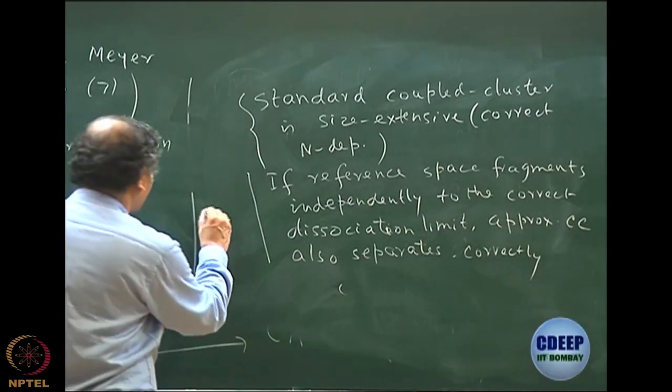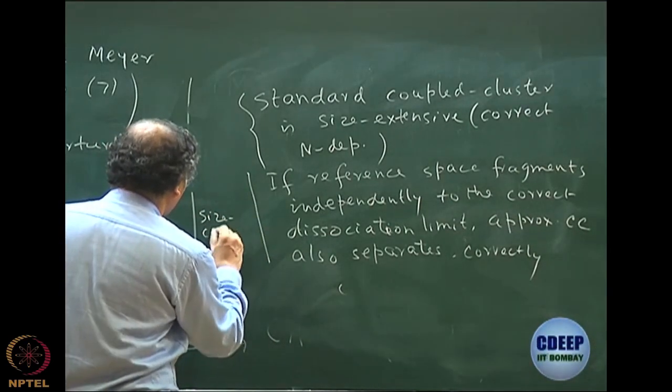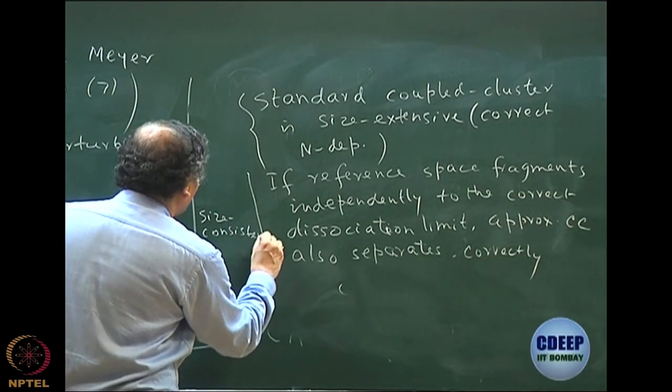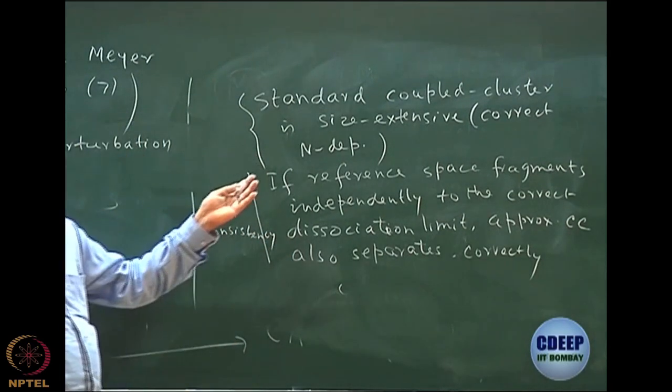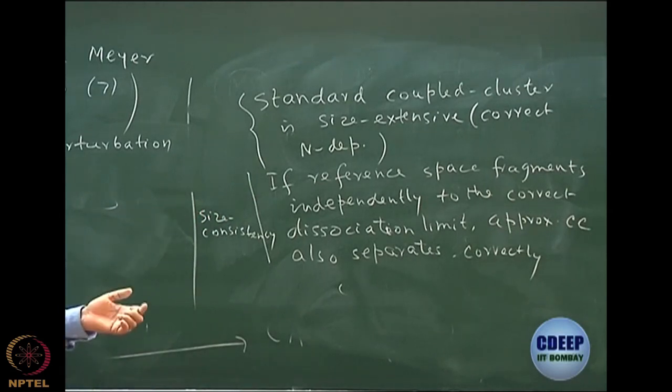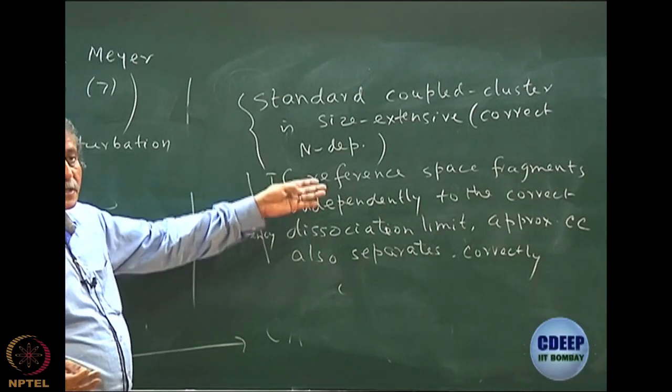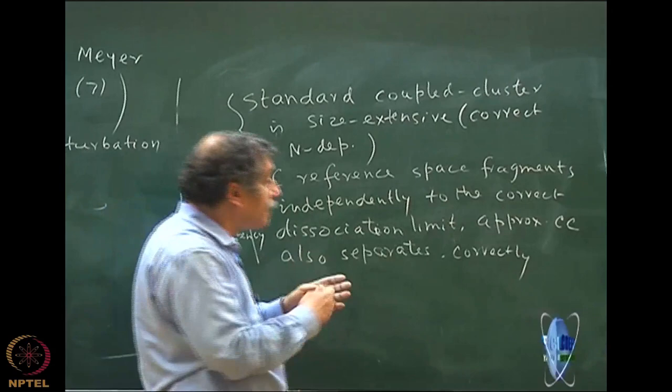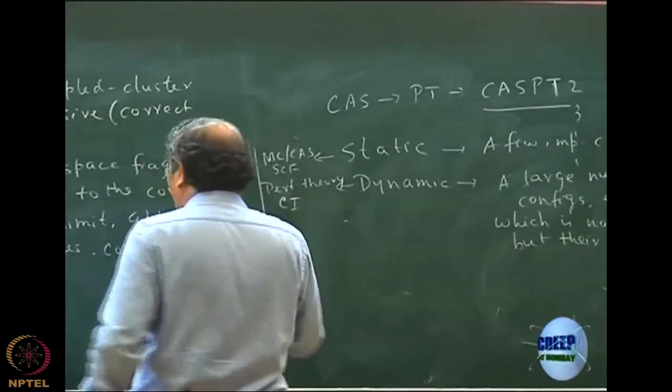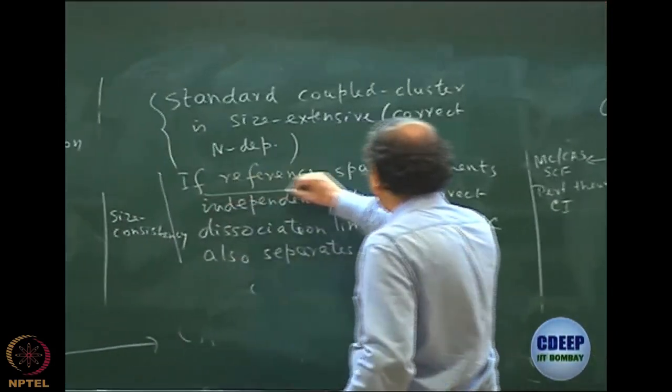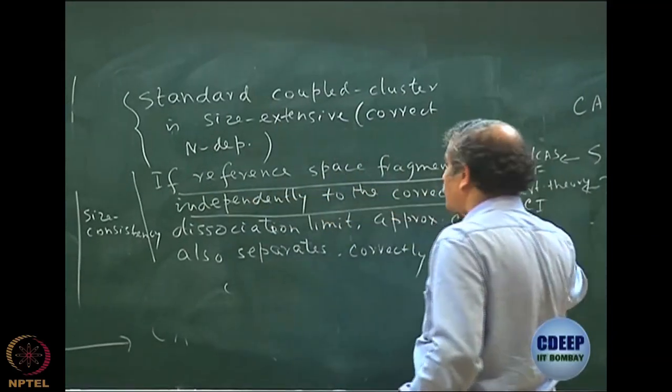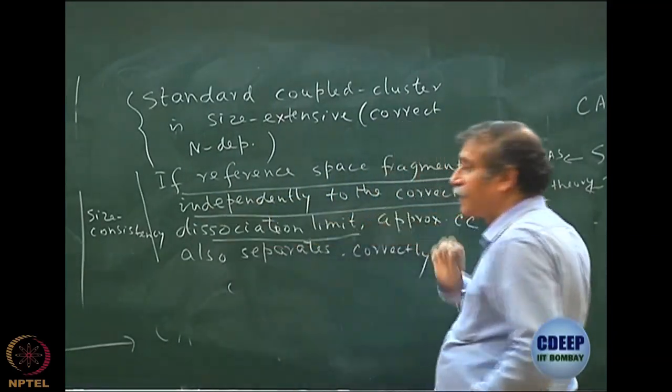This is called size consistency, right. We have already mentioned this is size consistency is basically dissociation. Please remember there is a slight difference between size consistency and extensivity. Extensivity is merely correlation energy being proportional to N. Size consistency is giving the correct dissociation. But for that one important part is the reference function must dissociate correctly.